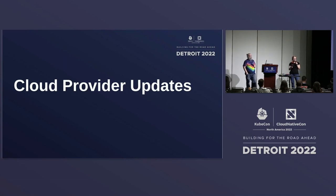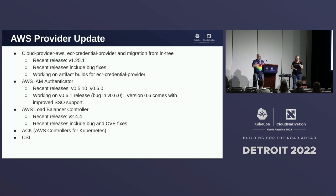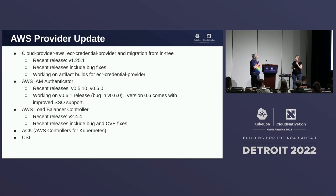Let's move into cloud provider updates — a little bit about what has been going on in each cloud provider more or less since the last KubeCon, so about the last six months. The AWS provider updates: they've had a recent release of their credential provider and migrated it from in-tree. They've got a lot of bug fixes, are working on artifact builds, have an IAM authenticator with new release versions, and are working on a bug patch. They've also got updates to their load balancer controller.